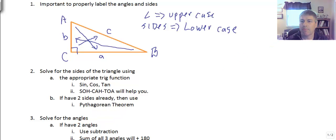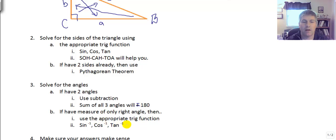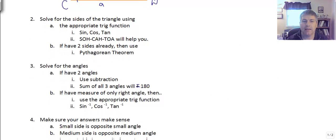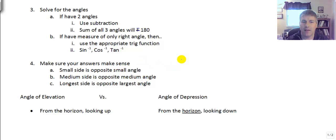To solve for the angles, we can use subtraction: if we have two angles of a right triangle, we subtract from 180 to find the third, since all three angles sum to 180 degrees. If we only know the right angle, we'll need to use the inverse trig function — arcsine, arccosine, or arctangent — and our calculator to find the missing angle from two known sides.